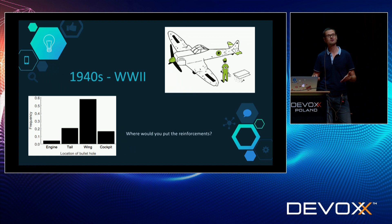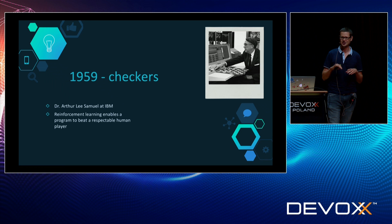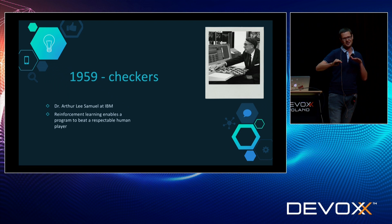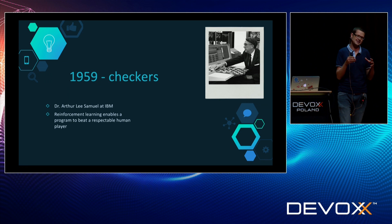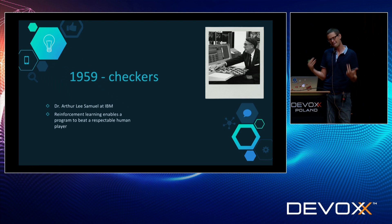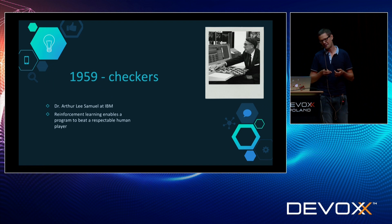Another interesting thing is the Checkers game in 1959, when Dr. Arthur Lee Samuel at IBM created a program. That program plays checkers against itself — program against program. And over time he was able to come up with a version of that program that could beat a respectable human player in Checkers. I find it really amazing because it's like 1959, long before I was born, and such an interesting invention came to be.